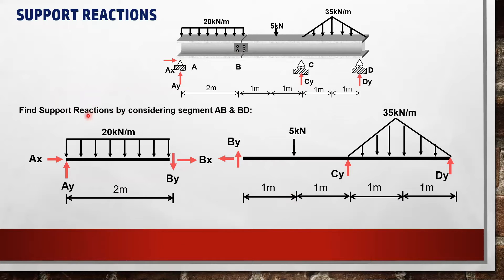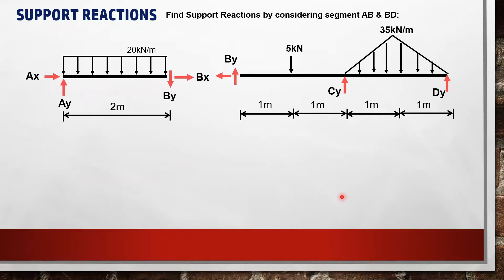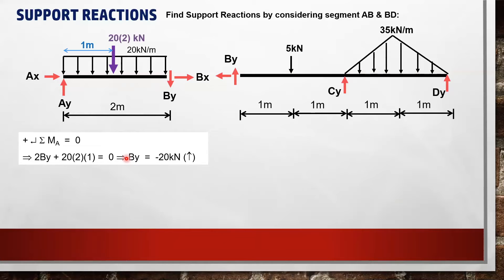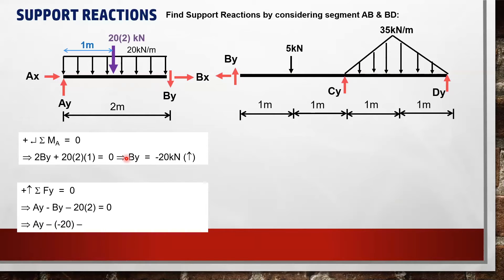To find the support reactions, we cut the section at hinge B and draw the equilibrium of sections AB and BD. We use equilibrium equations such as summation of moments and summation of Fy equal to zero. In segment AB, we determine the resultant force of the uniformly distributed load (UDL), which is the area of the rectangle. By taking the moment at A equal to zero and considering BY and the UDL, we can solve for BY.